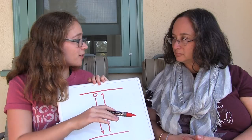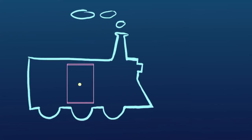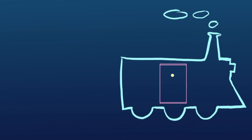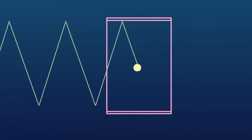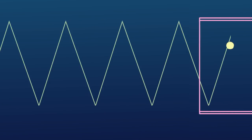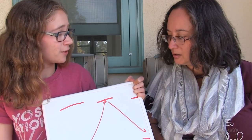But now say I'm in a train traveling at like three-fifths the speed of light and you're on the ground watching me. And so now the clock is not sitting still anymore and so the photon's not bouncing up and down anymore. It's got to bounce diagonally in order to keep up with how the clock is moving.